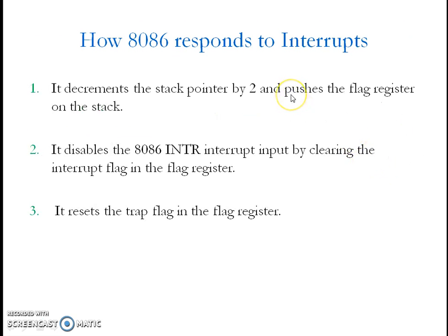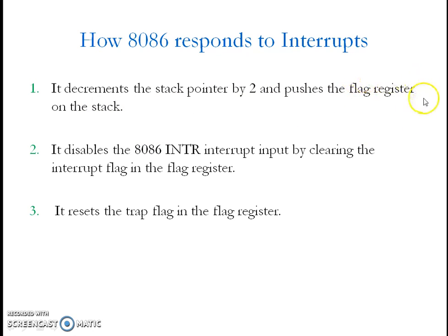When an interrupt occurs, the microprocessor has to stop executing the current program and transfer control from the mainline program to the interrupt service routine, execute it, and then bring back control to the mainline program. To do that, it first pushes the flag register contents onto the stack, because if you do not want to change the flag register contents, you have to push them onto the stack.